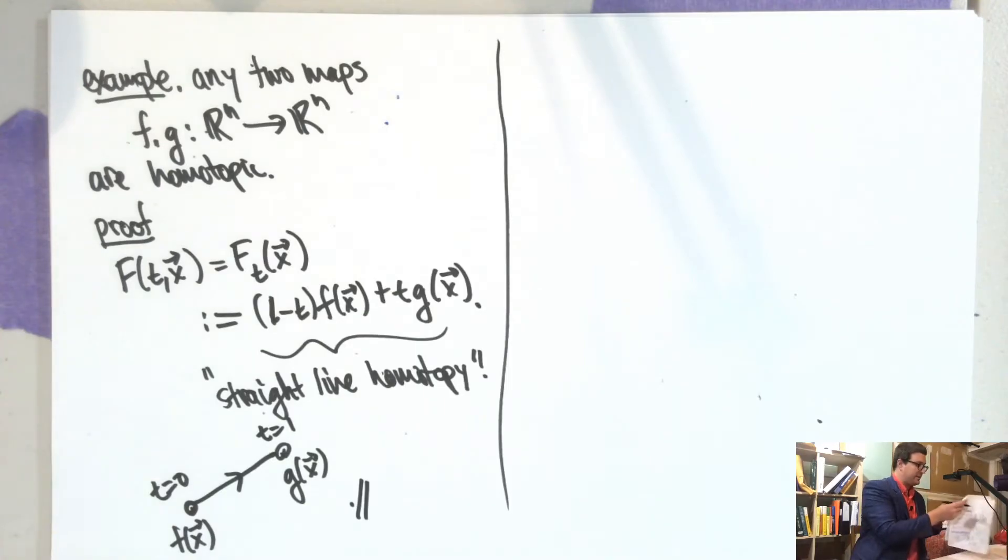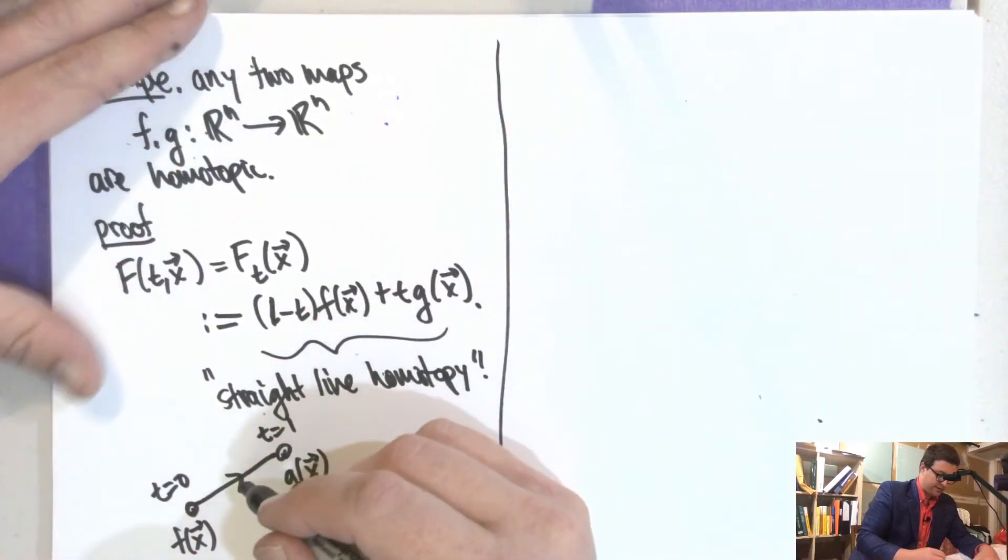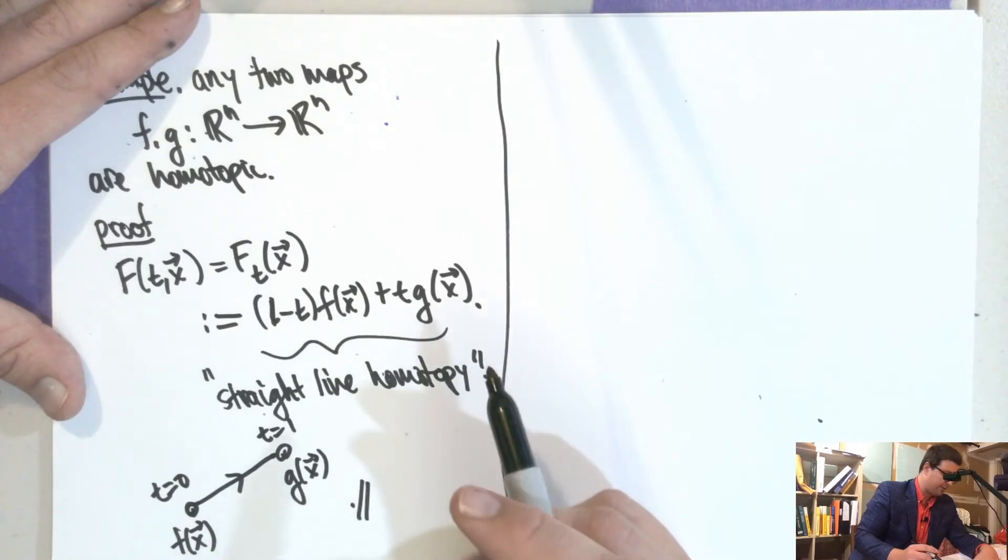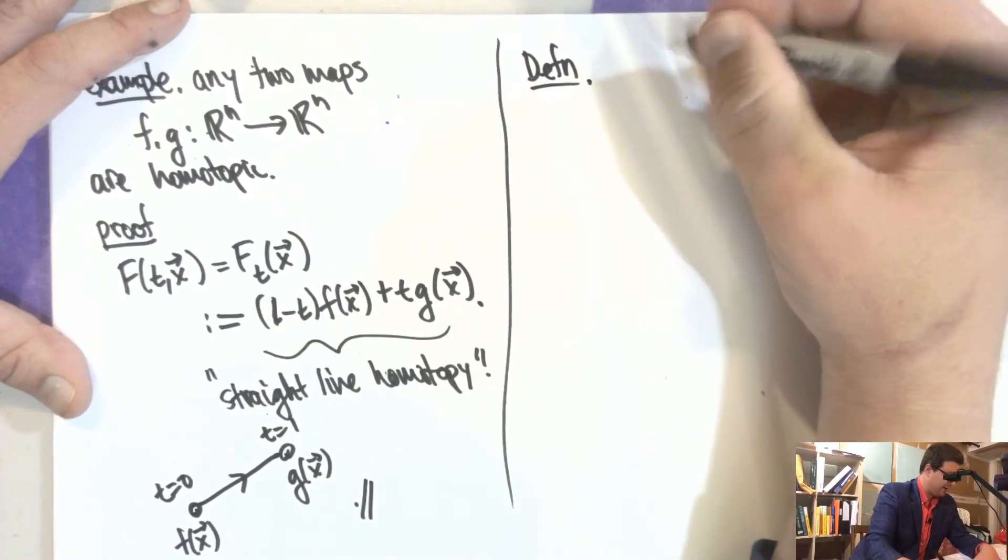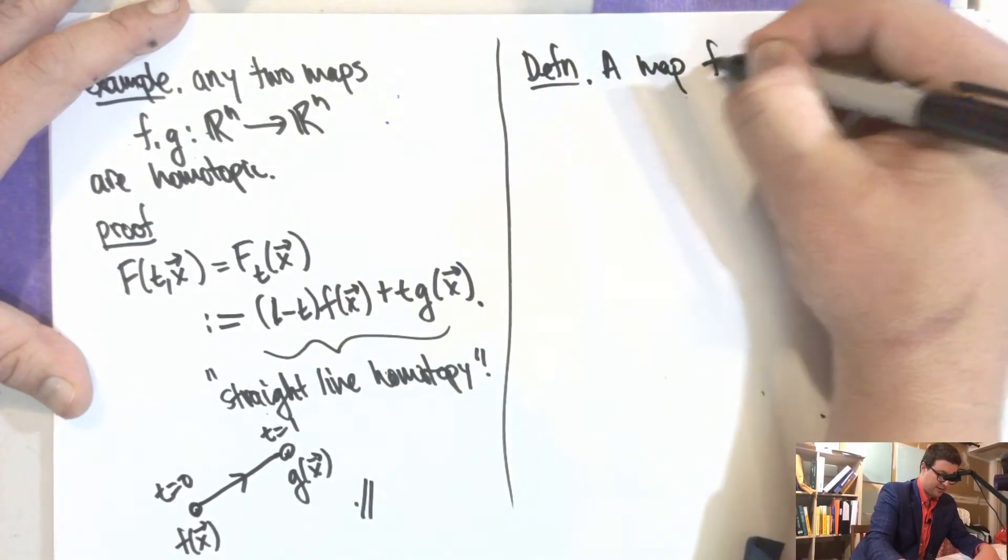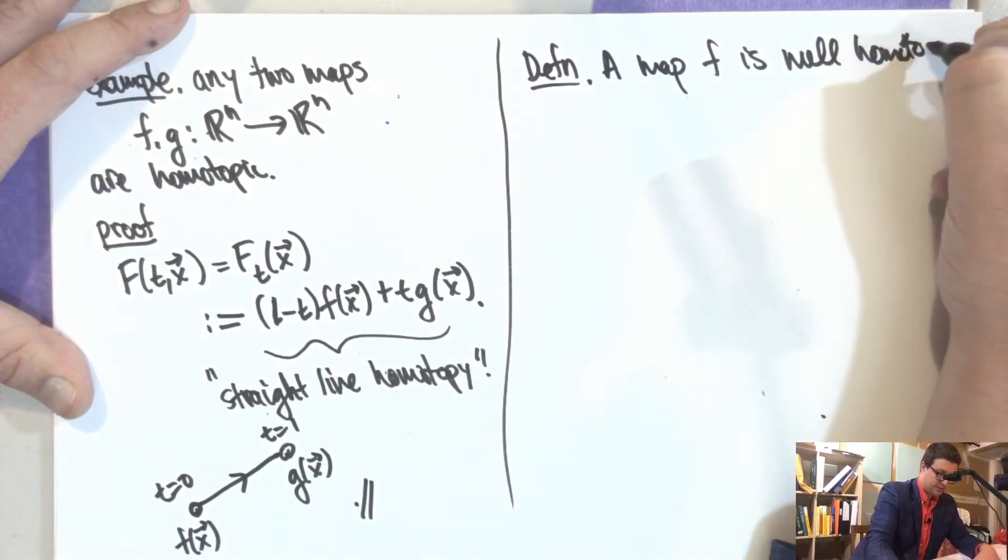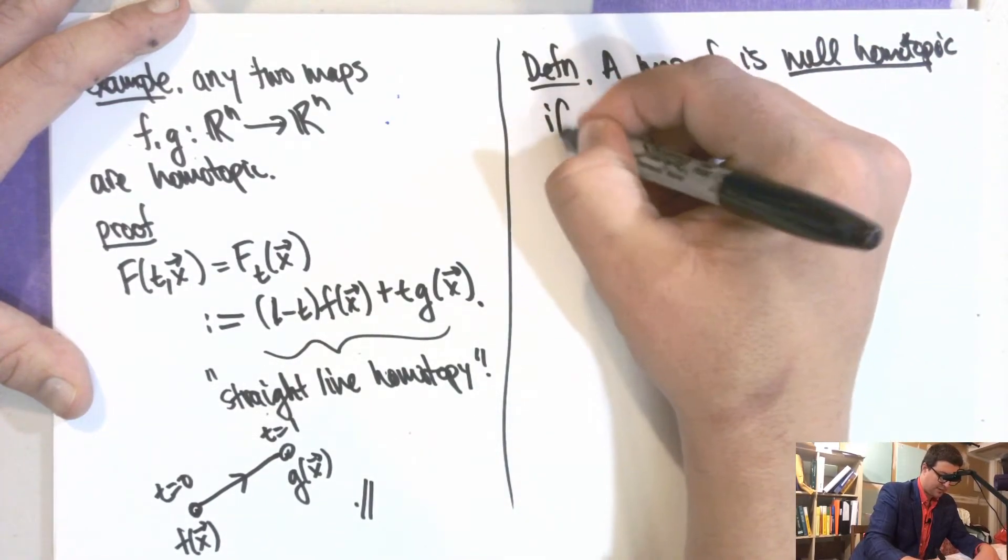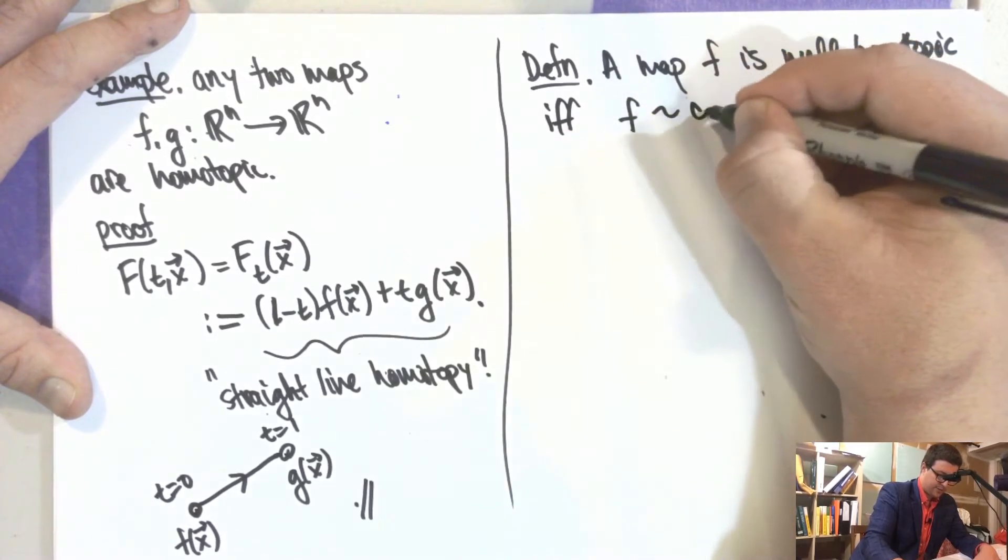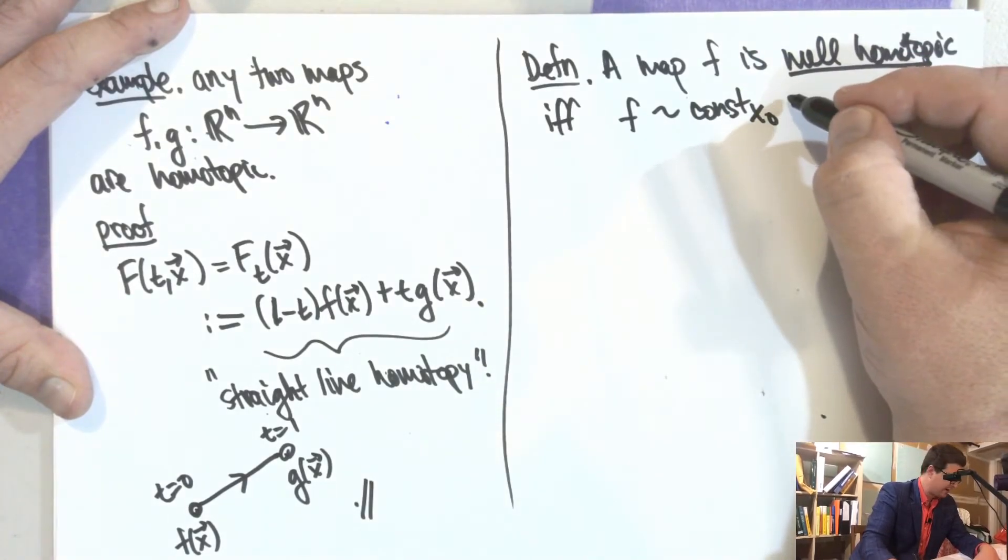As a consequence of this is that any map in here is what's called null homotopic or null homotopic. So what's a definition here? A map is null homotopic if and only if f is homotopic to a constant map for some X naught. So this thing is the constant map.